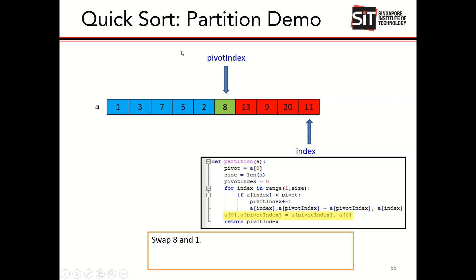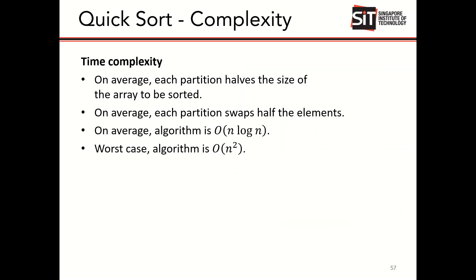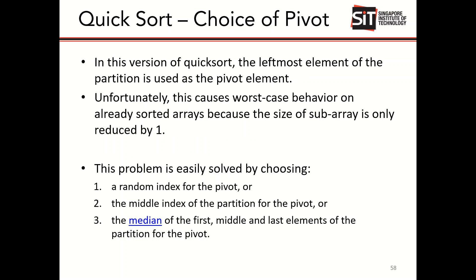We have come to the end of the quicksort algorithm. On average, each partition will halve the array to be sorted, giving an average time complexity of O(n log n). In the worst case it is O(n²). Think about what scenarios lead to the worst case. There are three: when the array is already sorted, when it is reverse sorted, and when all numbers in the array are the same value. In these cases, each partition only reduces the sub-array by one element, resulting in the O(n²) complexity.